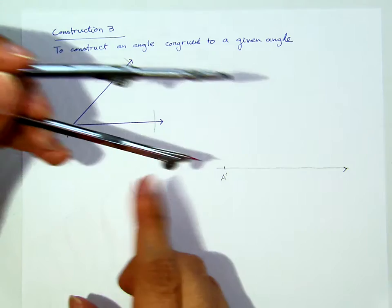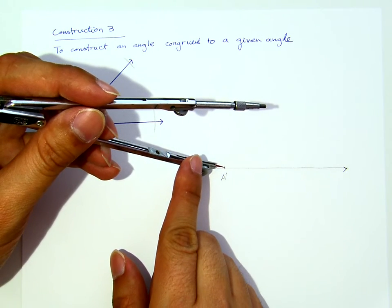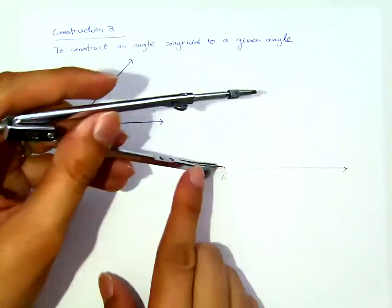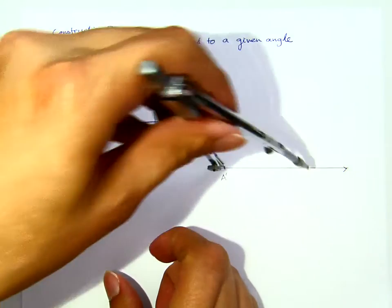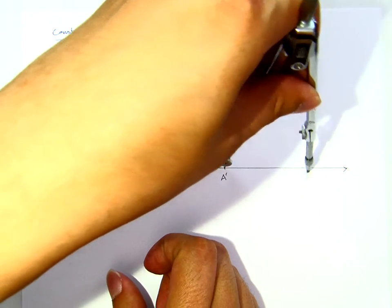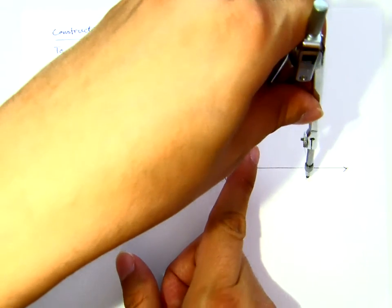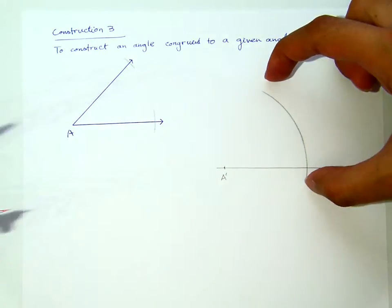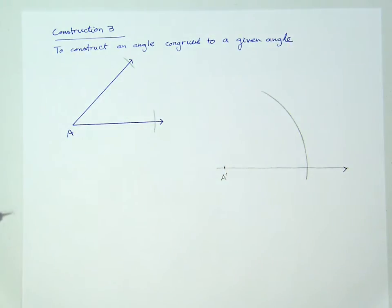Then, using the same opening, I will go to A', I put that pivot leg at A', and I will do pretty much the same. Using the same opening, I swipe it big enough. This opening here is approximately larger than the one there.